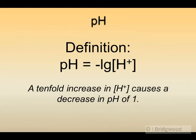Notice that a tenfold increase in concentration of hydrogen ions causes a decrease in pH of 1. Don't forget to quote your pH values to two decimal places.